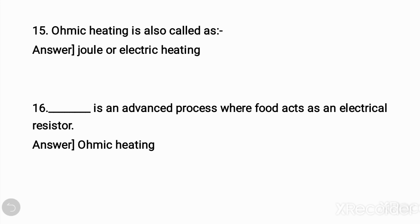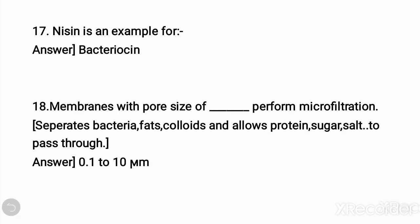Fifteenth question: ohmic heating is also called? Answer: joule or electric heating. Sixteenth question: dash is an advanced process where food acts as an electrical resistor. The answer is ohmic heating. Seventeenth question: nisin is an example for? Answer: bacteriocin.